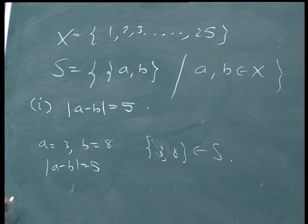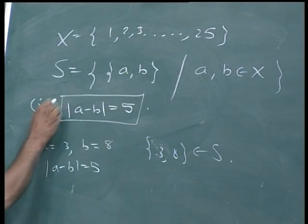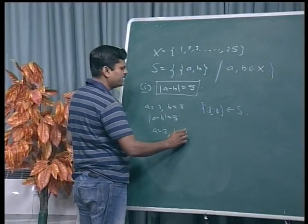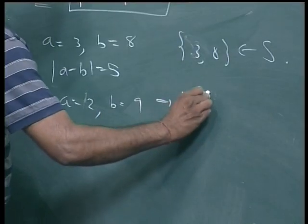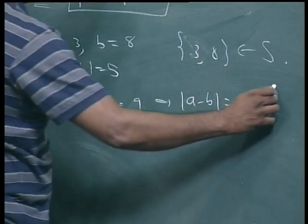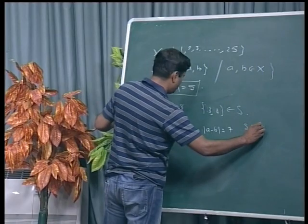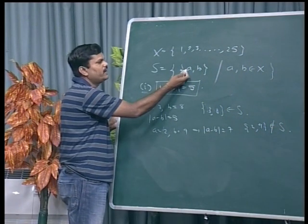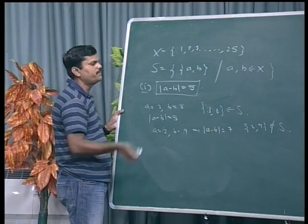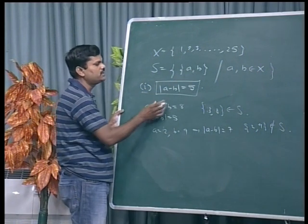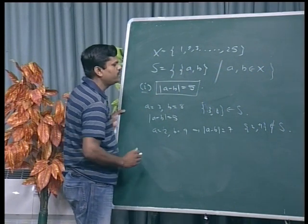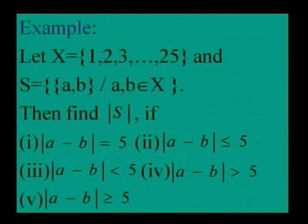This is our first condition: mod of a minus b equal to 5. But if I take a equal to 2 and b equal to 9, then mod of a minus b is 7, so the pair (2, 9) does not belong to S. Since a and b each have 25 possibilities, we use combinatorics to find the number of elements in S.